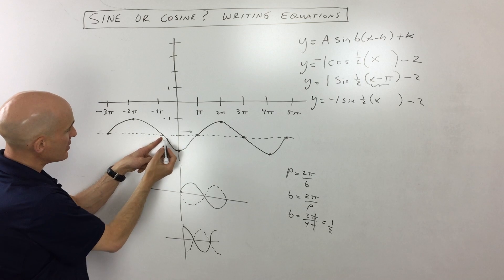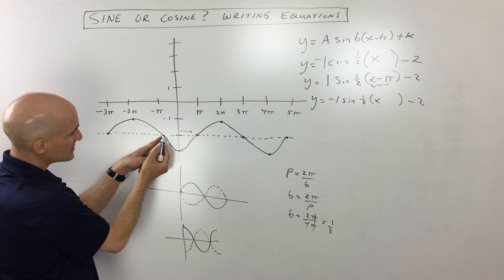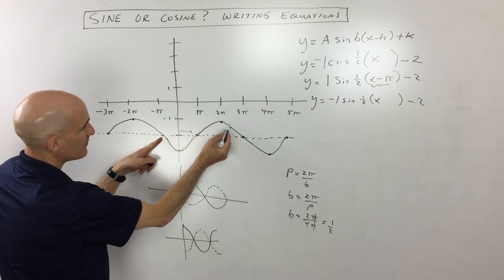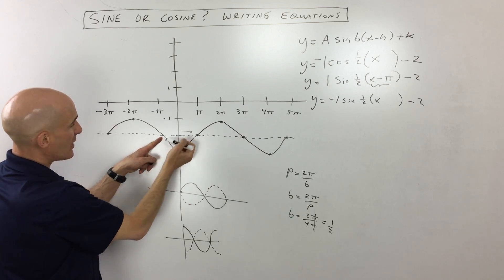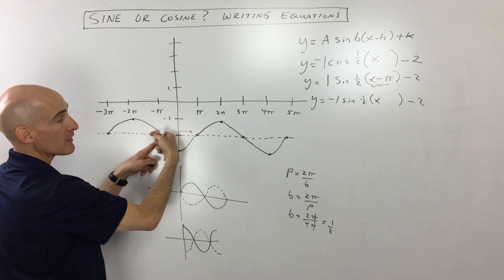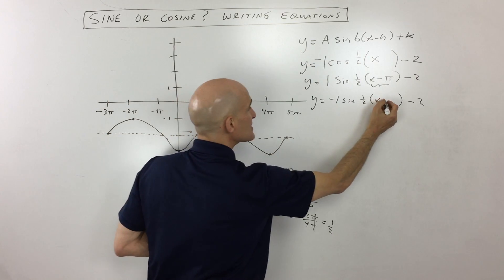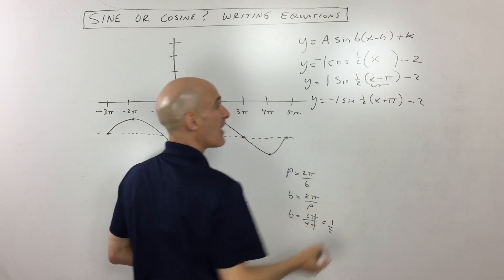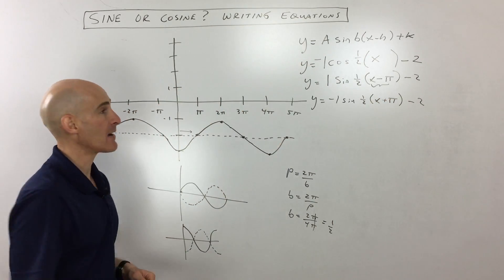So where does that look like? Well, that looks something like it's starting here now, and it's going down, back up, and like that. So that means now it's being shifted to the left pi, which means that this is actually going to be the opposite plus pi. Remember the one grouped with x has the opposite effect on the graph.